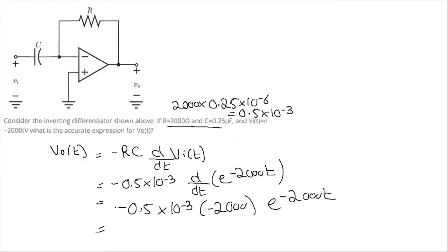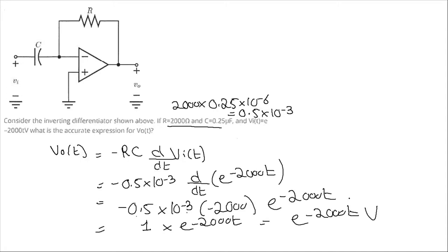Now minus times minus gives plus. When 0.5 is multiplied by 2000, we get 1, and 10 to the power minus 3 cancels with the three zeros, giving 1 multiplied by e to the power minus 2000t. So the output of the circuit is equal to e to the power minus 2000t volts. This is my answer.